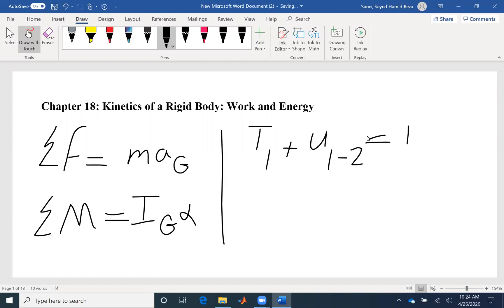So the principle is the same as work and energy of a particle. The initial kinetic energy plus the work that is done on the sample between instant one and two gives us the final kinetic energy.